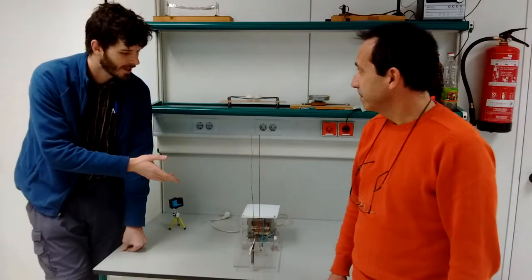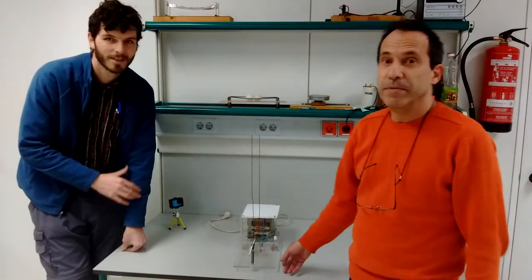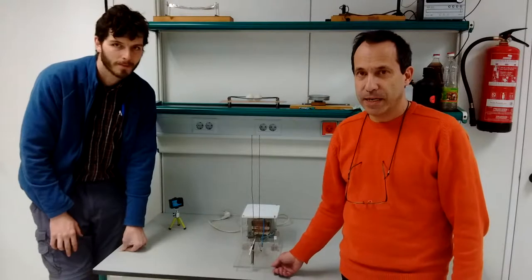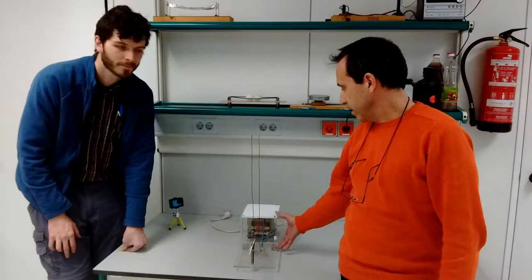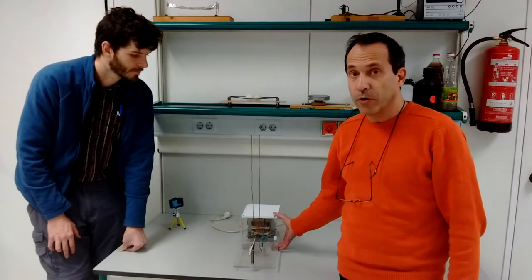Can you explain what it is? Well, this experiment is usually called the Jacob's Ladder. It consists of a transformer that is taken out of a microwave.